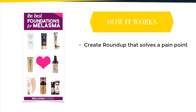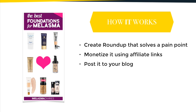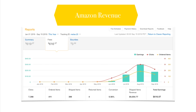Because people are going to Pinterest to search for this kind of information, they're finding my roundup and buying products I recommend. Here's how it works: you create a roundup that solves a pain point — think about your audience and what they're struggling with — then create a roundup full of solutions for that pain point, monetize it using affiliate links, post it to your blog, and pin it on Pinterest. Then let Pinterest do the rest of the work. In the last two and a half months I've earned over $600 from that single roundup — on a brand new blog with less than 300 followers.